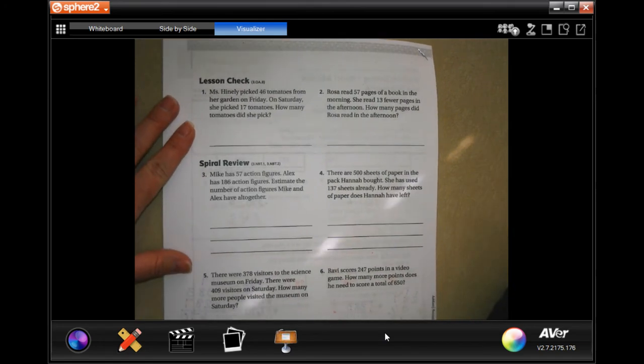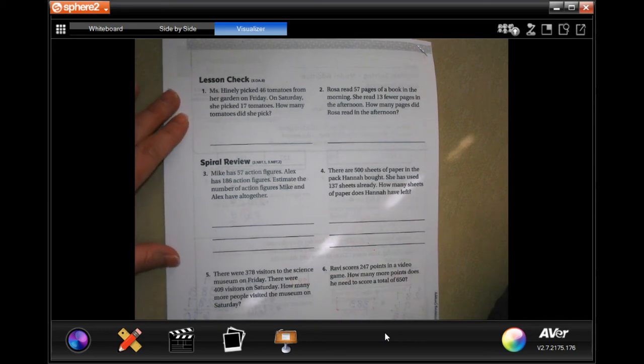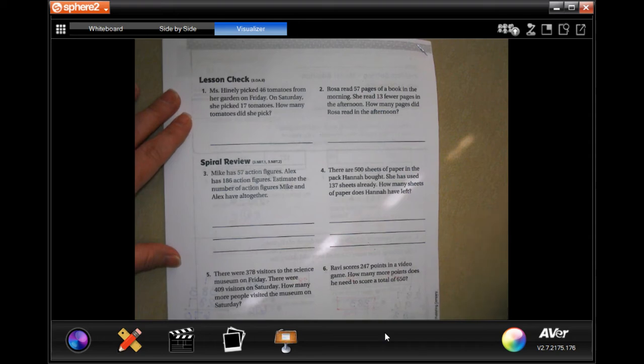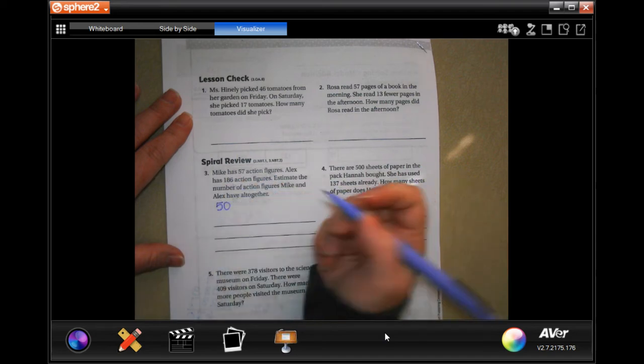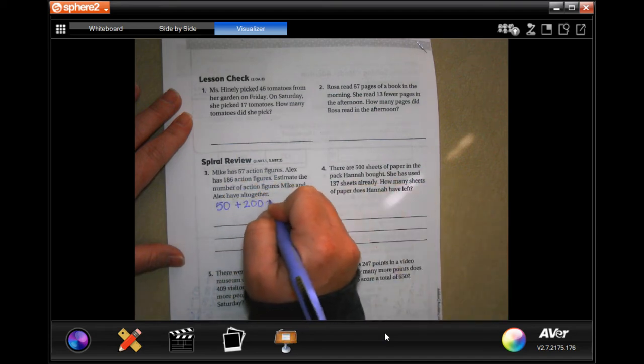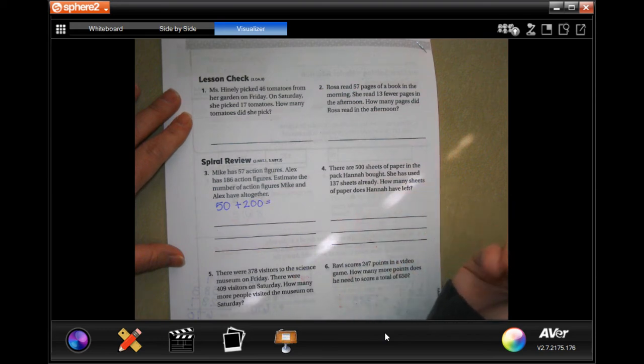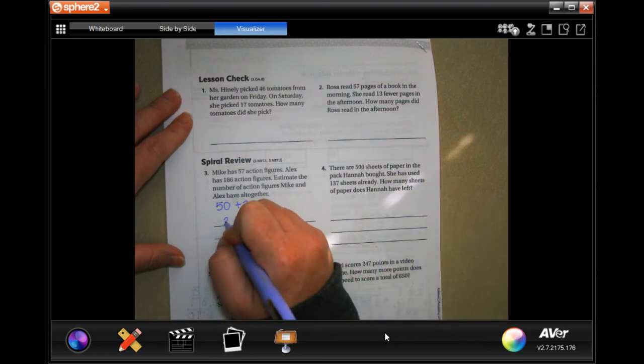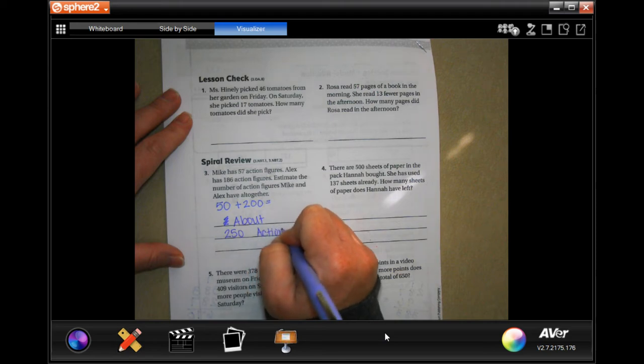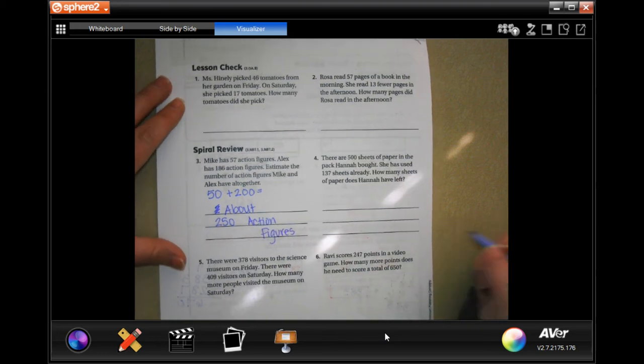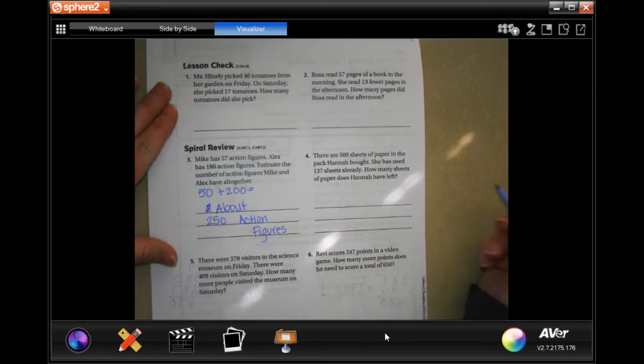Spiral review. Mike has 57 action figures. Alex has 186 action figures. Estimate the number of action figures Mike and Alex have together. Well, 57, let's round that to 50. And 186, I would round that to 200. So, 50 and 200 is going to be about 250 action figures. Or if we're going to make all the boys in the class mad, dolls.